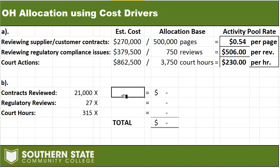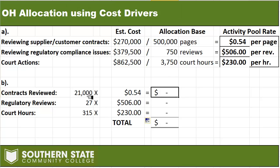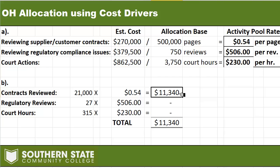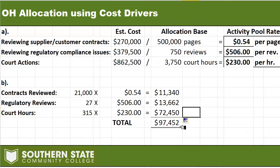We'll use that activity pool rate and just multiply it by the portion that department consumed. So we take 21,000 pages times $0.54 per page, 27 regulatory reviews times $506, and 315 court hours times $230, and carry those on down. In total, we would allocate $97,452 of overhead to that department.